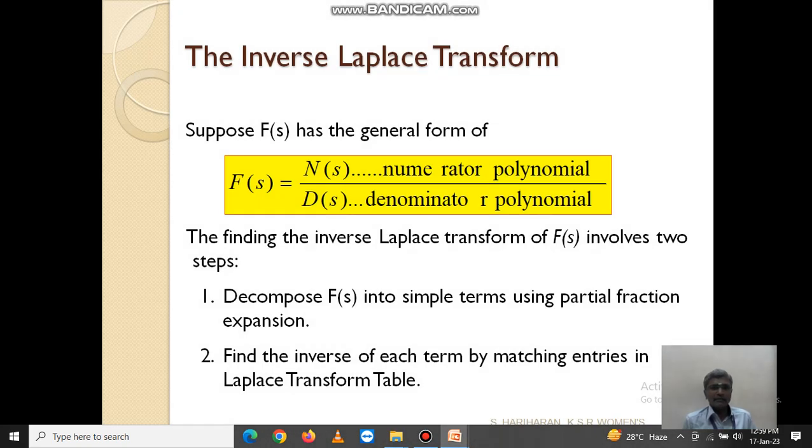So next one, the inverse Laplace transform. Suppose F(s) has the general form of N(s)/D(s), that is numerator polynomial divided by denominator polynomial. Finding the inverse Laplace transform of F(s) involves two steps. First step: decompose F(s) into simple terms using partial fraction expansion. Second step: find the inverse of each term by matching entries in Laplace transform table.